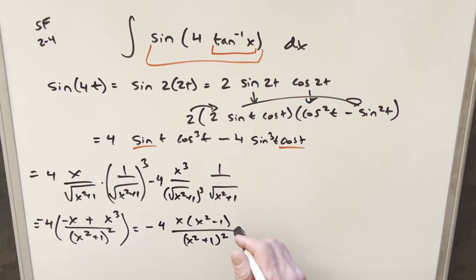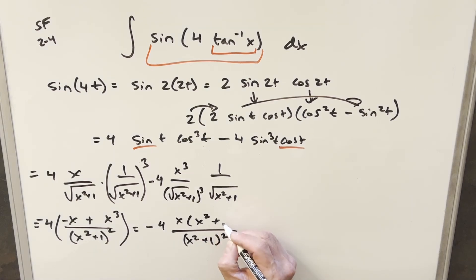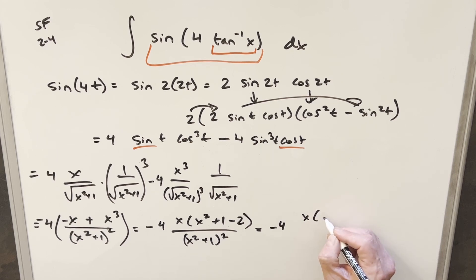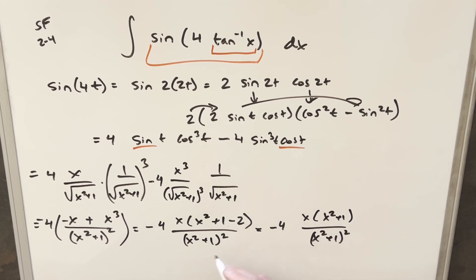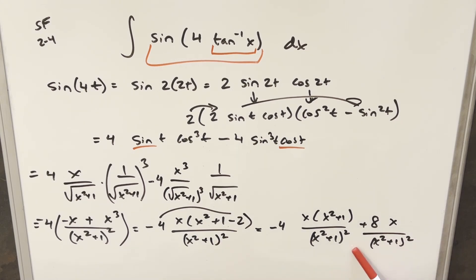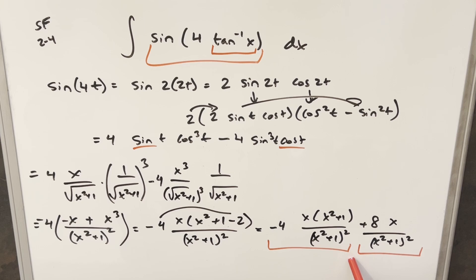To make this easier to integrate, I'll rewrite x²−1 as (x²+1) − 2. Separating into two fractions with the minus 4 out front: first term is −4x/(x²+1), and distributing minus 4 times minus 2 gives plus 8x/(x²+1)². Now I have two integrals I can work with, so I'll split this into two separate integrals and continue from there.